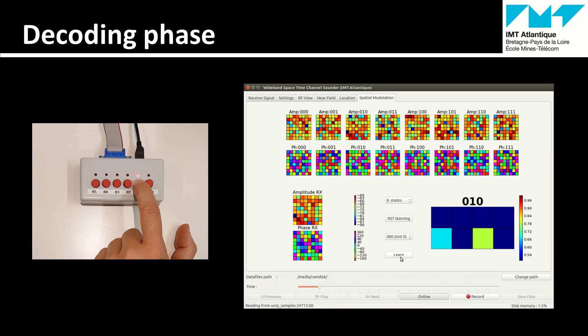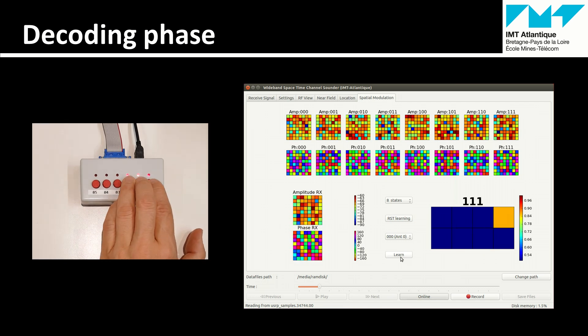And we can try to select a different antenna and see what is decoded by the receiver. And as you can see on this example, it works. For instance, 010, 110, 011. In each case, the good value is decoded at the receiver.